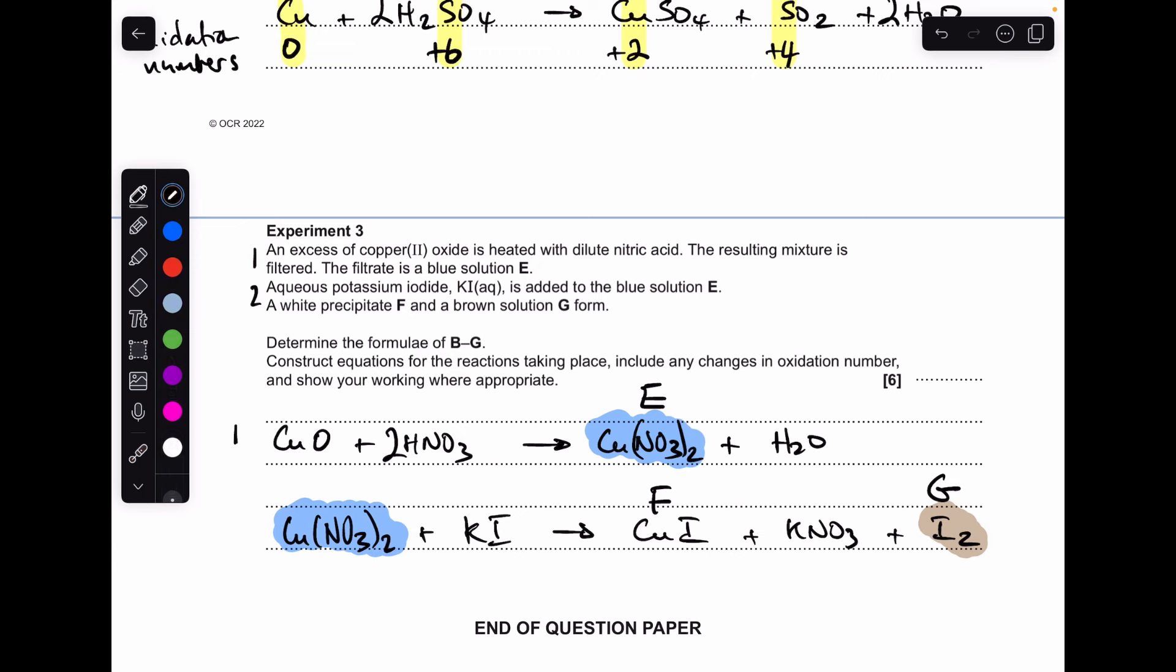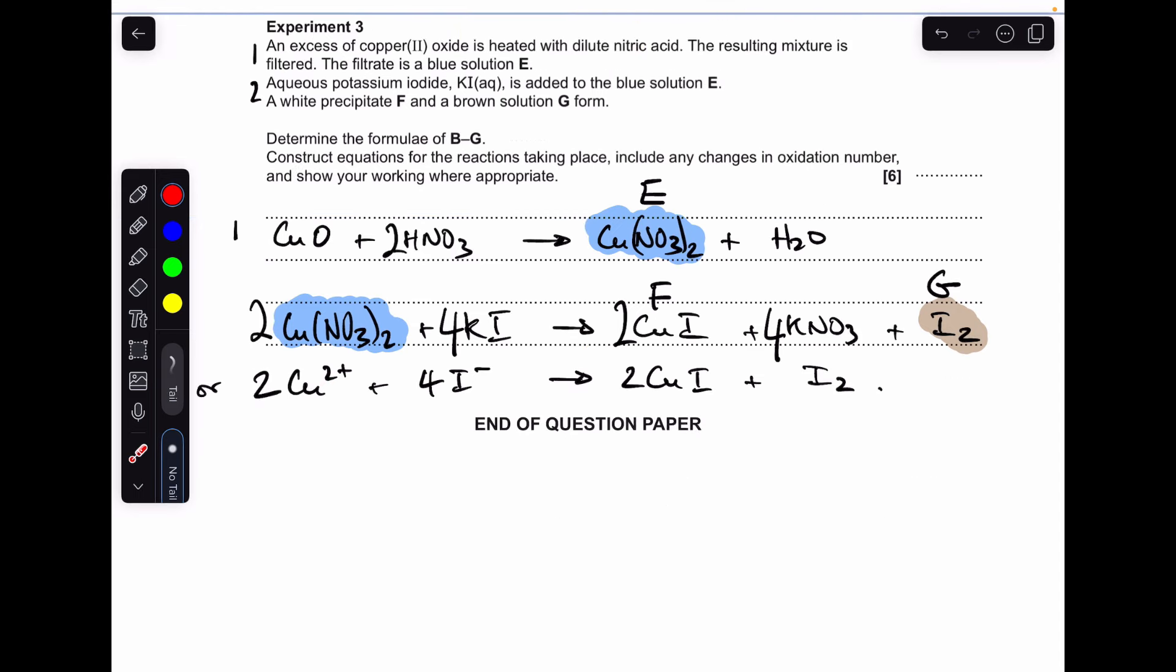So in terms of balancing, we need a 2 in front of the copper(II) nitrate, a 4 in front of the KI, 2 in front of the CuI, and a 4 in front of the KNO₃. Alternatively, you could have given that equation there, that's absolutely fine as well. Last thing we need to do is talk about the oxidation number changes. So copper starts out at plus 2, and it drops down to plus 1. Iodine starts at minus 1 in the ion, and it goes up to 0 in the element. So I'll just write that up, and then we're done.